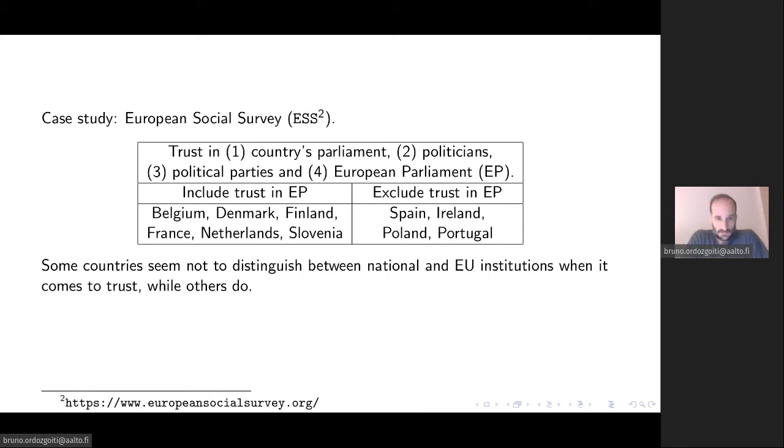In the case of the countries on the left, they seem to regard the problem of trust in institutions, either national or European, as the same thing. These answers seem to be driven by the same factor. But this is not the case of the countries on the right, which do not include the question of trust in the European Parliament in the same CRO subset.